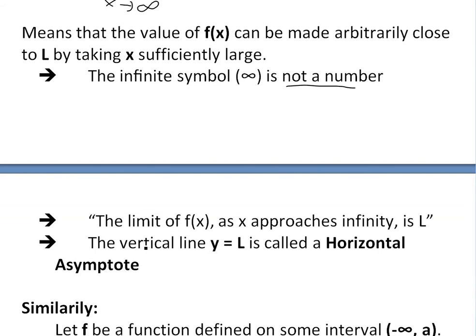And here it says the vertical—actually this is wrong, this is the horizontal, so you gotta fix that. So basically the horizontal line y = L is called a horizontal asymptote because it never really reaches it.